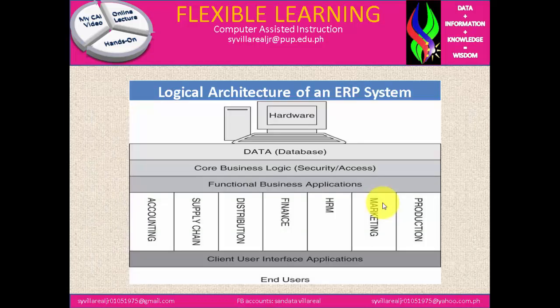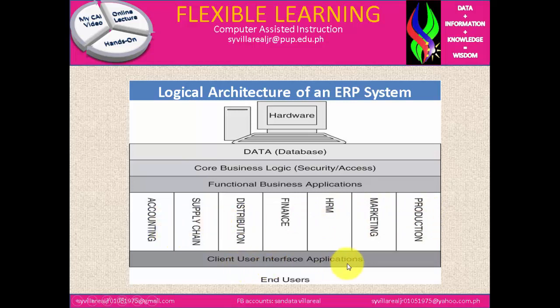Now we have here the logical architecture of an ERP system, and you need to memorize this because the subject is system integration and architecture. The logical is considered to be the hardware, the data, core business logic, security access, and the functional business application. We have production, marketing, HRM, finance, distribution, supply chain, and accounting. It goes to the client user interface, application, and the end user. The hardware, identifying it, is all considered to be a mainframe, so all departments can get data.